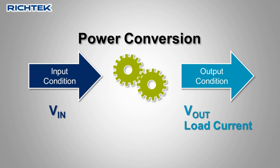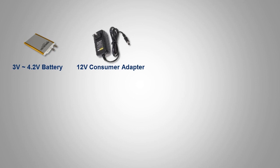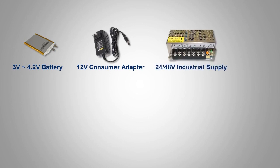Let's have a look at some examples. The power source of your application could be a lithium-ion battery, a small 12 volt adapter, a larger 24 volt or 48 volt industrial supply, or maybe your application is fed directly from the AC line voltage.